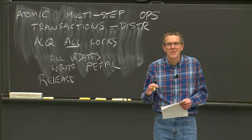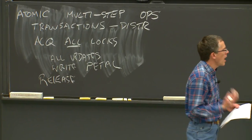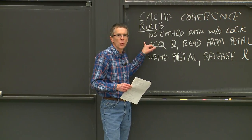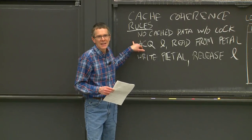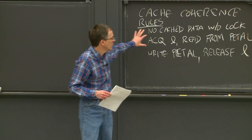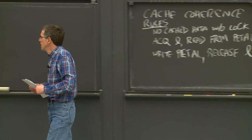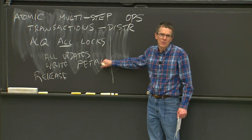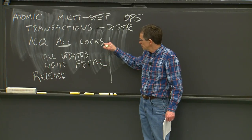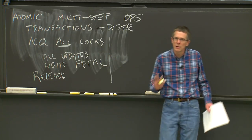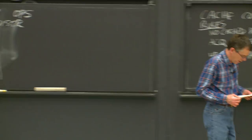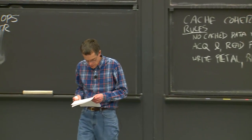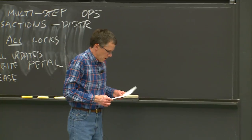An interesting thing about this use of locks is that Frangipani is using locks for two almost opposite purposes. For cache coherence, locks ensure that writes are immediately visible to anyone who wants to read them. For atomicity, locks ensure that nobody sees the writes until the operation is completely finished — because all locks are held until all writes are done.